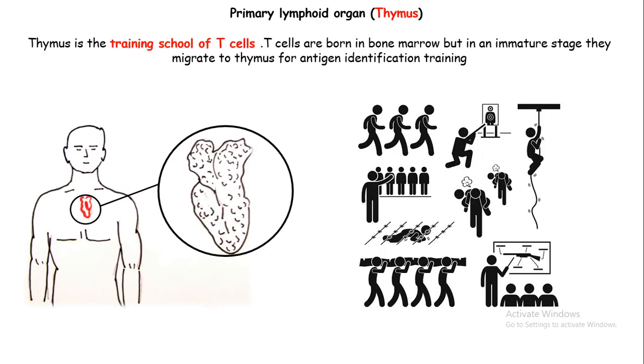Let's start. Our body has one primary lymphoid organ known as thymus. Thymus is a training school of T-cells where T-cells develop. In the bone marrow, T-cells form and in an immature state they go to their school, which is the thymus.